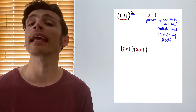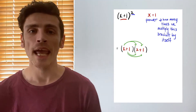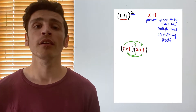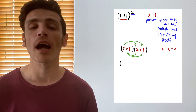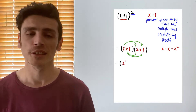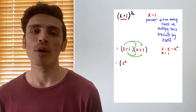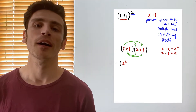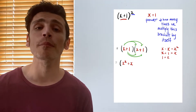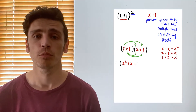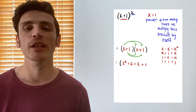Now we take our components and multiply them individually by our second bracket. The first component of the first bracket is x. So firstly we have x multiplied by x — well, x multiplied by x is x to the power of 2, or x squared. Next we have x multiplied by positive 1 — any number multiplied by 1 is just itself, so x multiplied by 1 gives me x. Now we repeat the process with the second component of our first bracket, which is positive 1. So 1 multiplied by x gives me x, and 1 multiplied by 1 gives me 1.